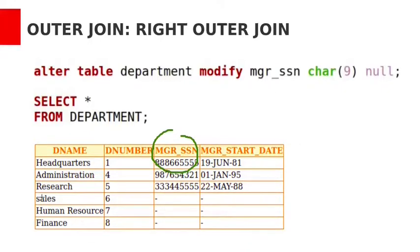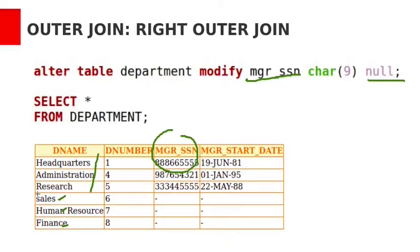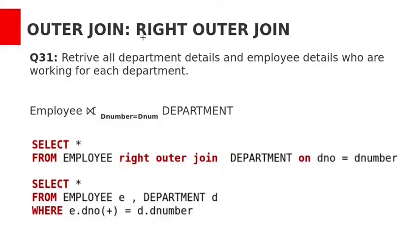We want to insert three new departments — Sales, Human Resource, and Finance — without specifying manager SSN. So the NOT NULL constraint is removed from the manager SSN column: ALTER TABLE department MODIFY manager_SSN CHAR(9) NULL. Now null values are allowed in manager SSN. Earlier we had only three departments; after adding these three new departments, the department table now has six entries.